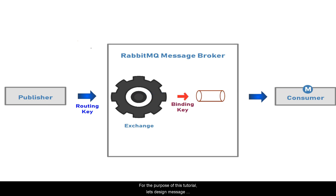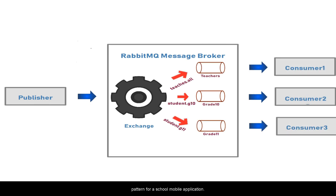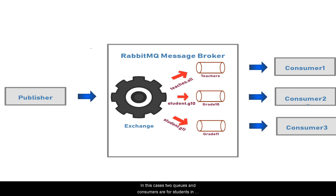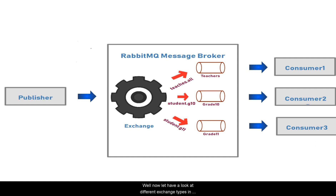For the purpose of this tutorial, let's design a message pattern for a school mobile application. Here you have three queues bound to the exchange with different binding keys, and there are three consumers that fetch messages from corresponding queues. Two queues and consumers are for students in grade 10 and 12, and the third queue and consumer is for all teachers.